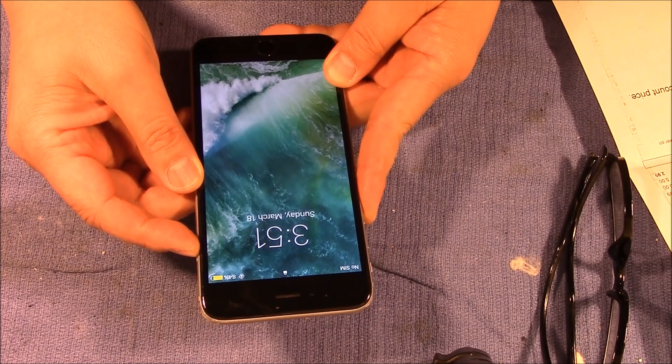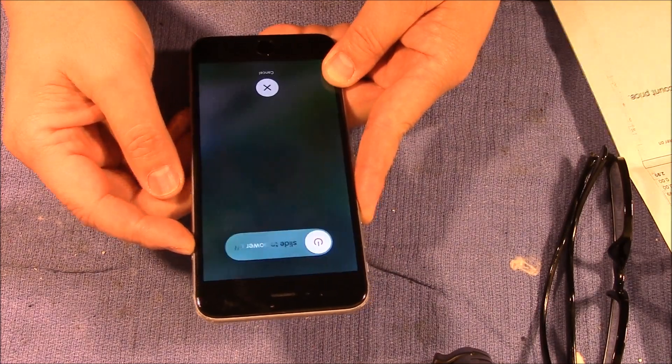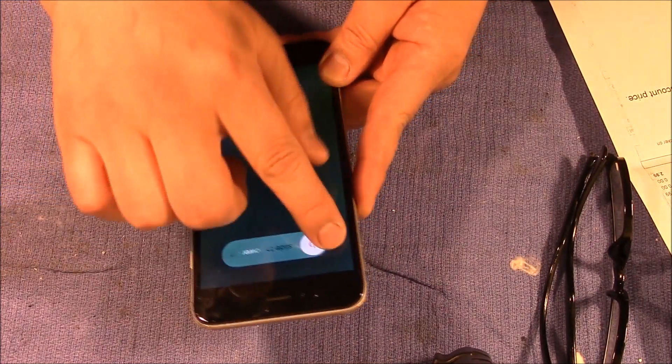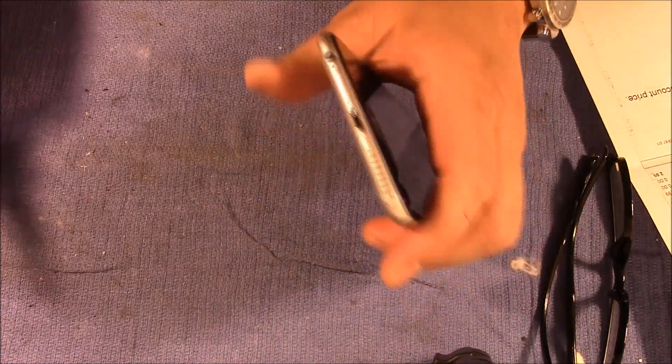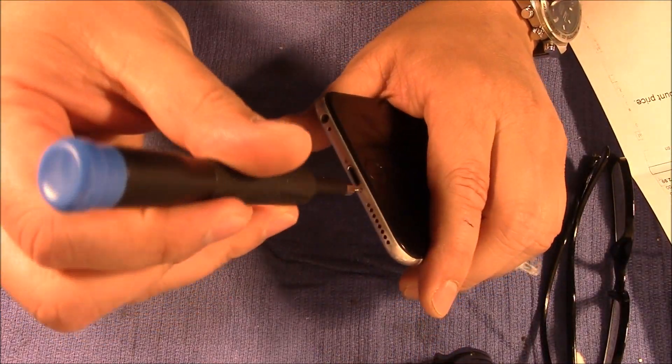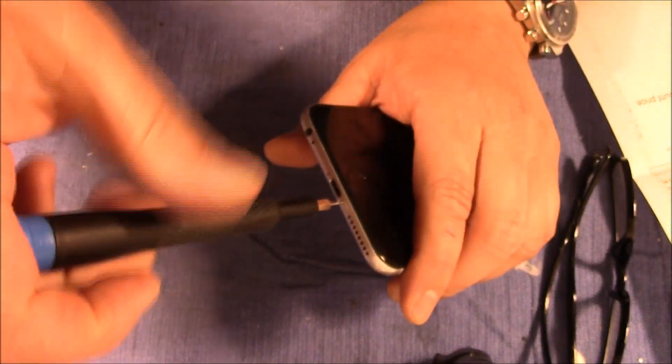So I'm going to power it off and we're going to open it up and see what's going on. All right, so just like anything we have the two pentalobe screws. Let's take those out.